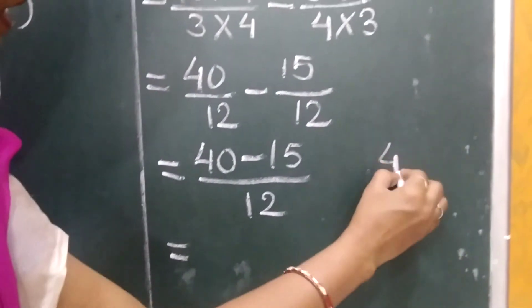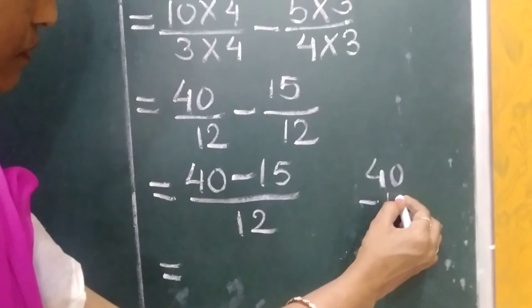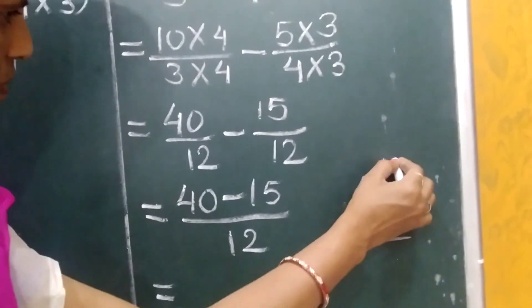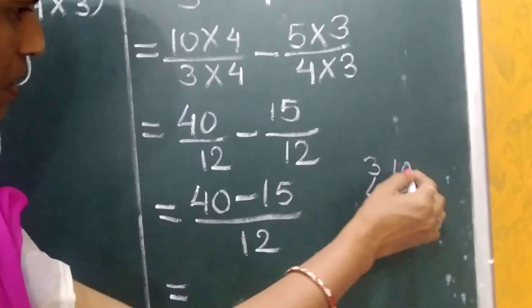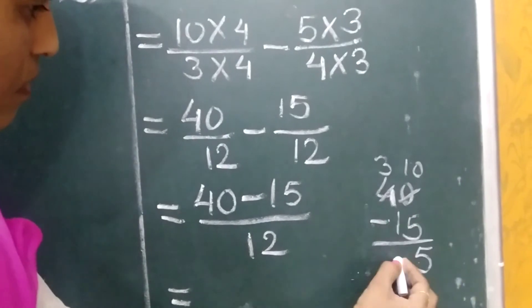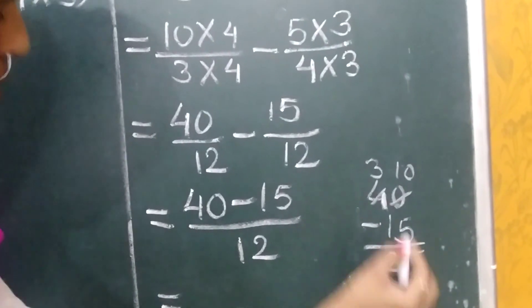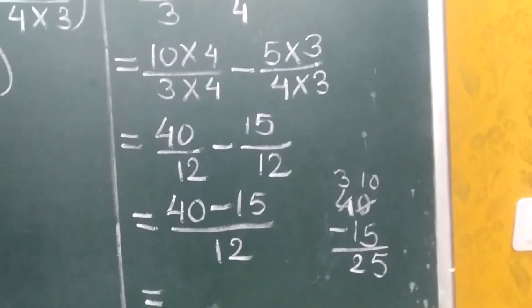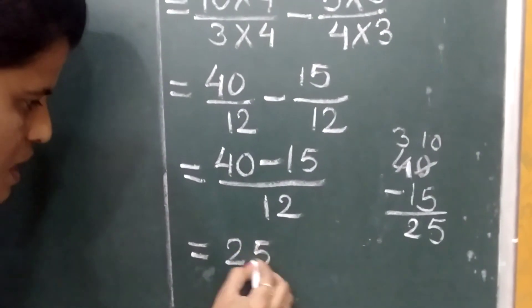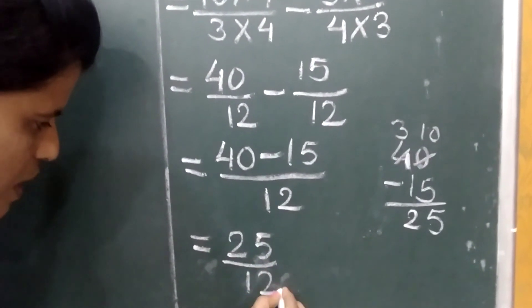So we get 40 minus 15 upon 12. Here what we get? 40 minus 15 is 25. So we get 25 upon 12.